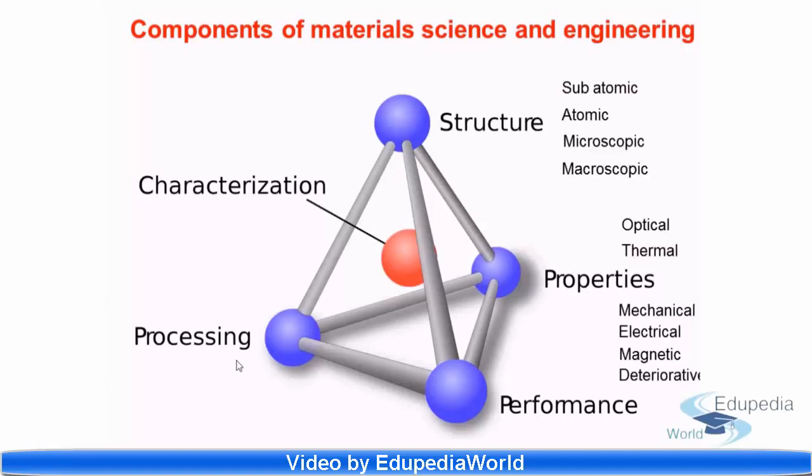Once we have seen the different structural sub-levels and different property types, the processing can affect the structure, mainly the microscopic and macroscopic structure. And this influence on the structure will affect the property. Different properties can be influenced. As a result, the performance will vary. So this is a holistic thing. Any change at one end can bring a change at the other end. This sums up the scope of material science and engineering.